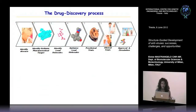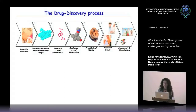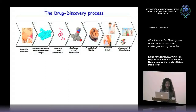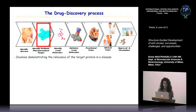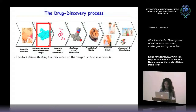Just a schematic view of the drug discovery process, which involves several steps and which takes an average of 10-15 years when we are lucky, from drug discovery to the approval of the drug. First of all we have to identify the disease that we want to study and then identify the target protein involved in the disease.